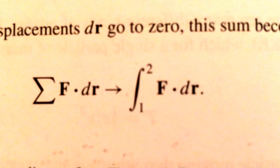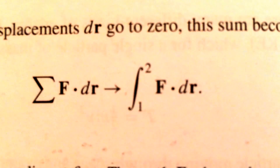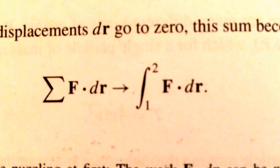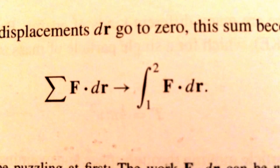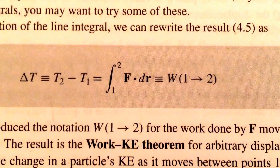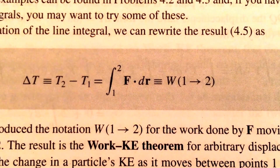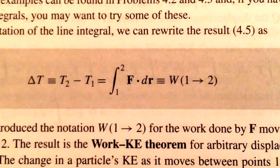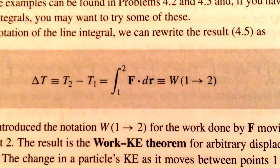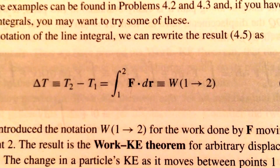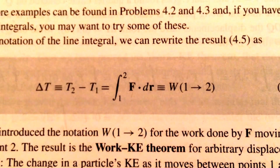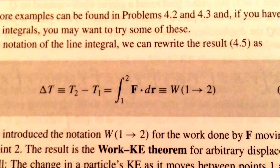That line integral represents the work — the work done by the forces on the particle. This is probably an idea you visited in your intro physics classes, but now we're going to formalize it with a more sophisticated approach. This connection between the change in kinetic energy, the line integral of the force dotted into the displacement vector, and the work — we call that the work-kinetic energy theorem. If there's a change in the kinetic energy of a particle, it's due to work done along the trajectory.